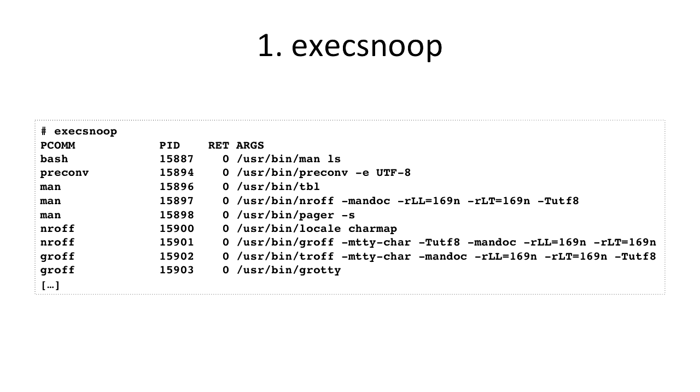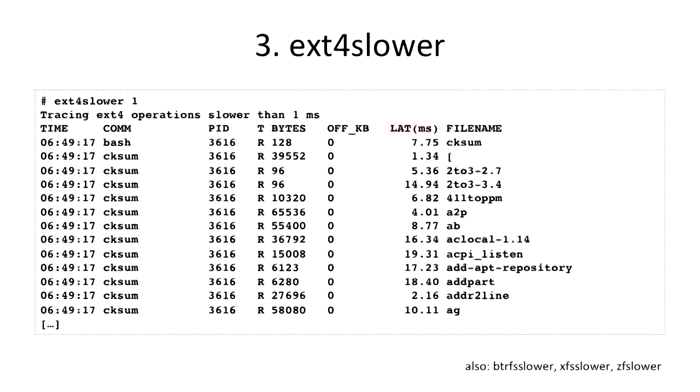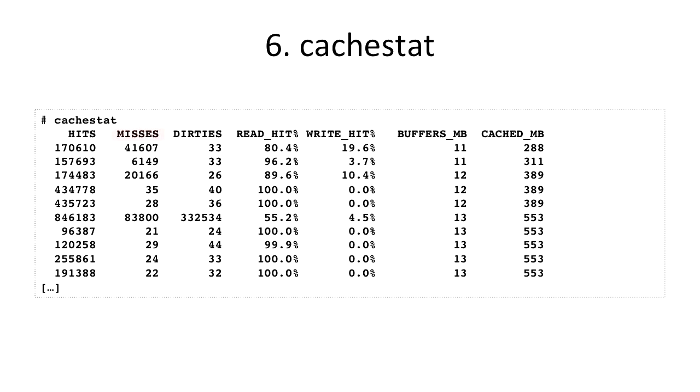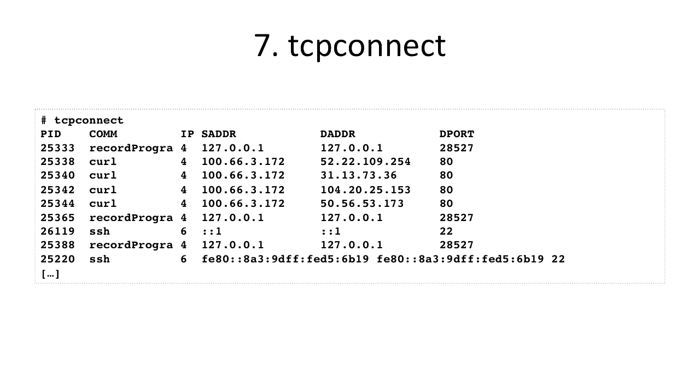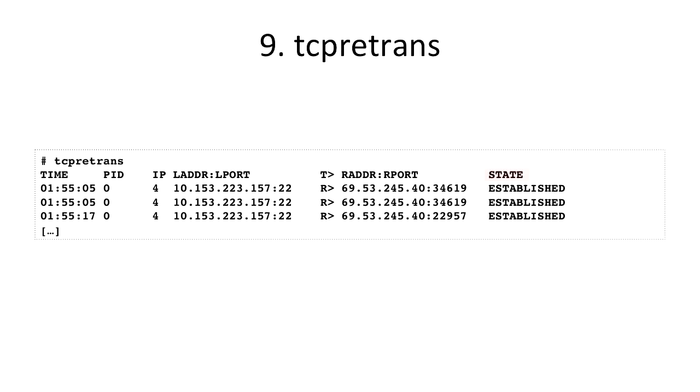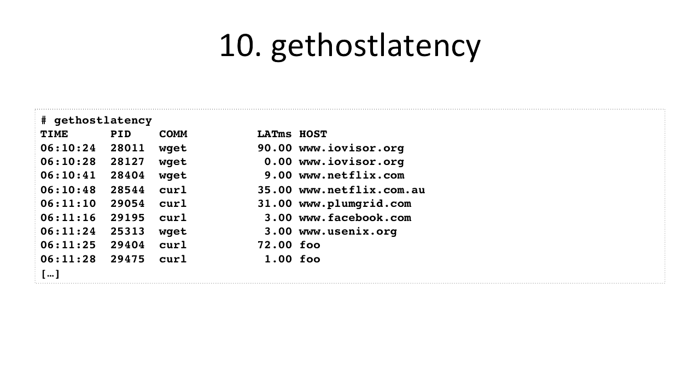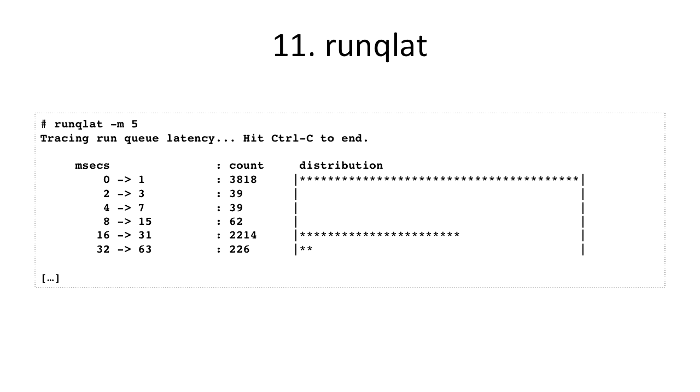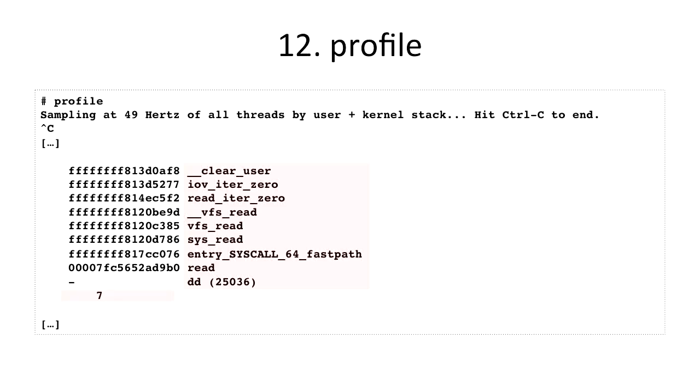I have some screenshots in the slides, but I already did some demos of execsnoop and opensnoop, my favorites. There's also cachestat for doing the file system cache statistics. TCP tools to see just who am I connecting to without the overhead of tracing send and receive - it's just doing the connect. The same for accept and retransmits. gethostlatency is another interesting tool which instruments the resolver library. And then I've got some scheduler tools that go into things like run queue latency. And the latest tools, and this is what made it into 4.9, Linux 4.9, is time sampling.